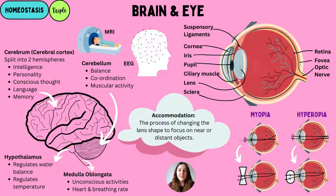If you're a triple scientist, you'll need to know about the brain and the eye and the different functions the different structures have. Let's talk about the brain first. The brain is split up into several different components. The first one is the cerebrum, otherwise known as the cerebral cortex, and it helps us with our intelligence, personality, conscious thought, language, and memory.